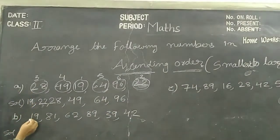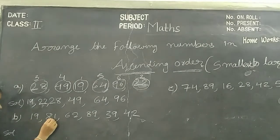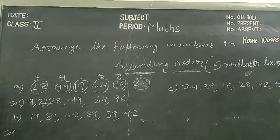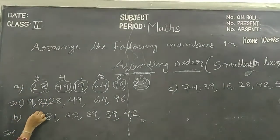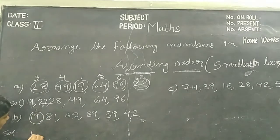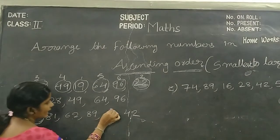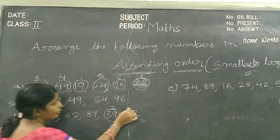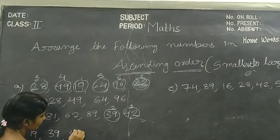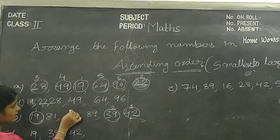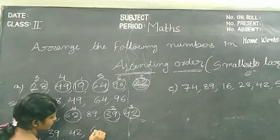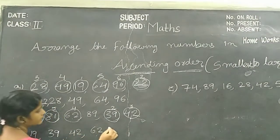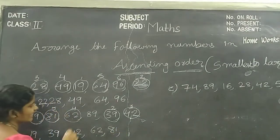Another example: 19, 81, 62, 89, 39, 42. In this example, what is the smallest number, children? Nineteen. Next number is 39. Next number is 42. Next number is 62. Next number is 81. Next number is 89.